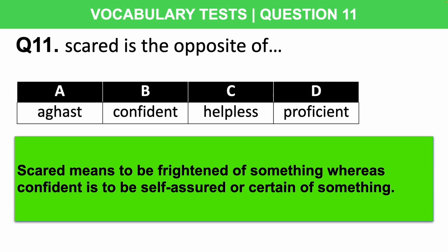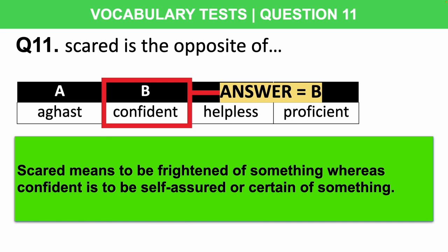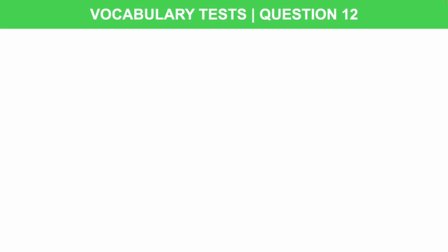Now I want you to have a go yourself. Question 12: Fain most closely means injury, pretend, persist, or solo? I'm going to give you five seconds — let me know your answer in the comment section below.